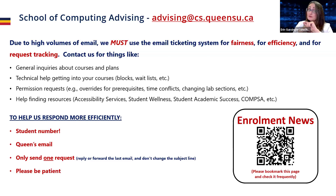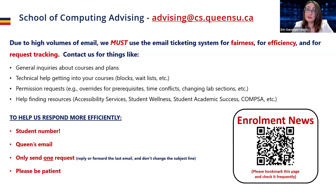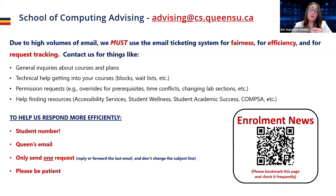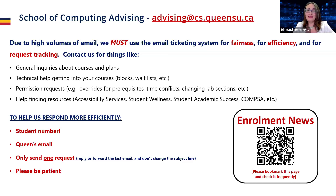We also have some resources and links on the enrollment news page, including our first year guide that goes over a lot of this material in a single document. We also have a CISC 121 readiness self-assessment available there — it gives you an idea of the level of coding proficiency you should have to feel comfortable starting with CISC 121. If you don't feel comfortable with that material, you should drop back and start with CISC 101 instead. That pretty much covers everything — there are a ton of questions in the Q&A and we're happy to answer them.